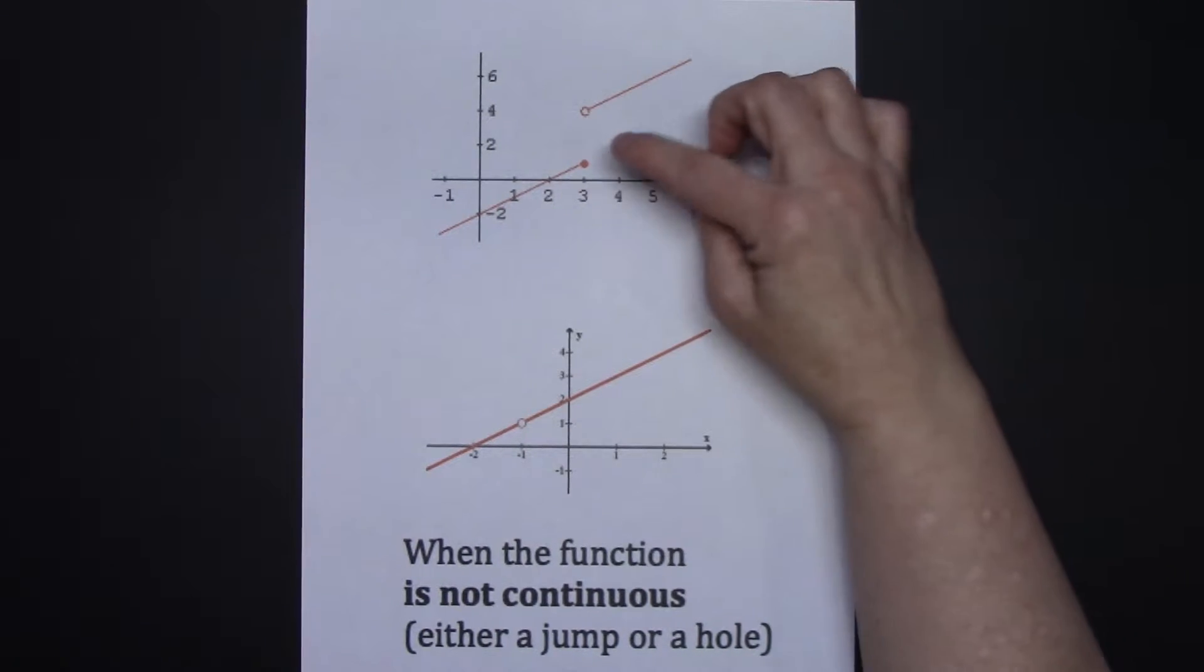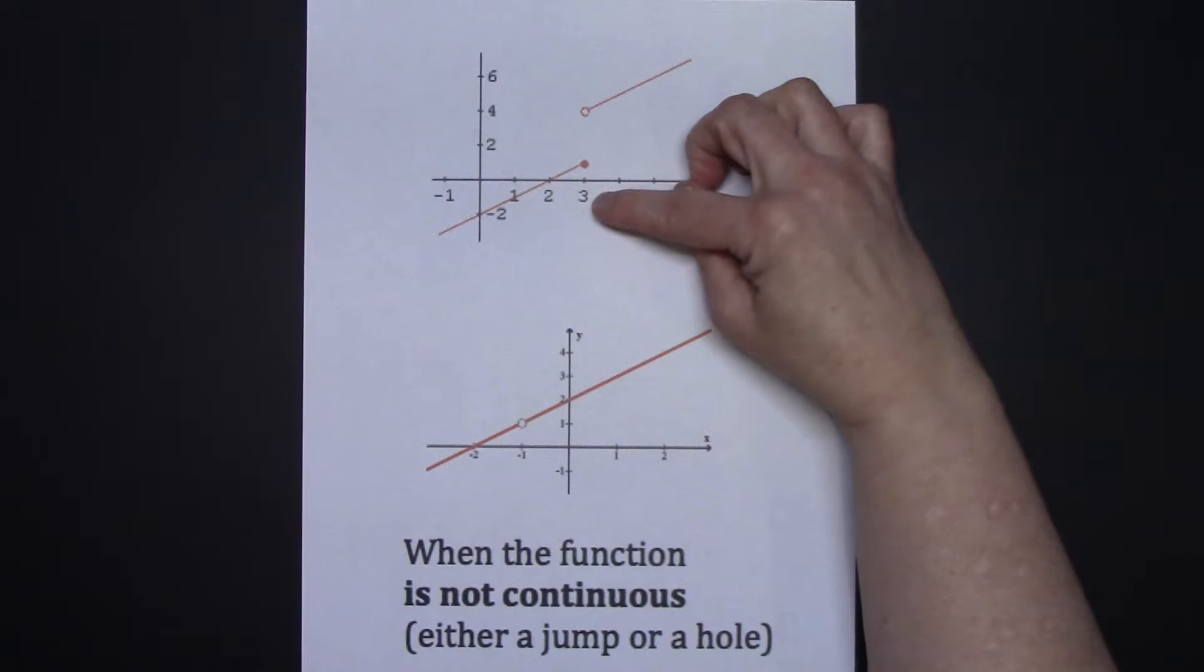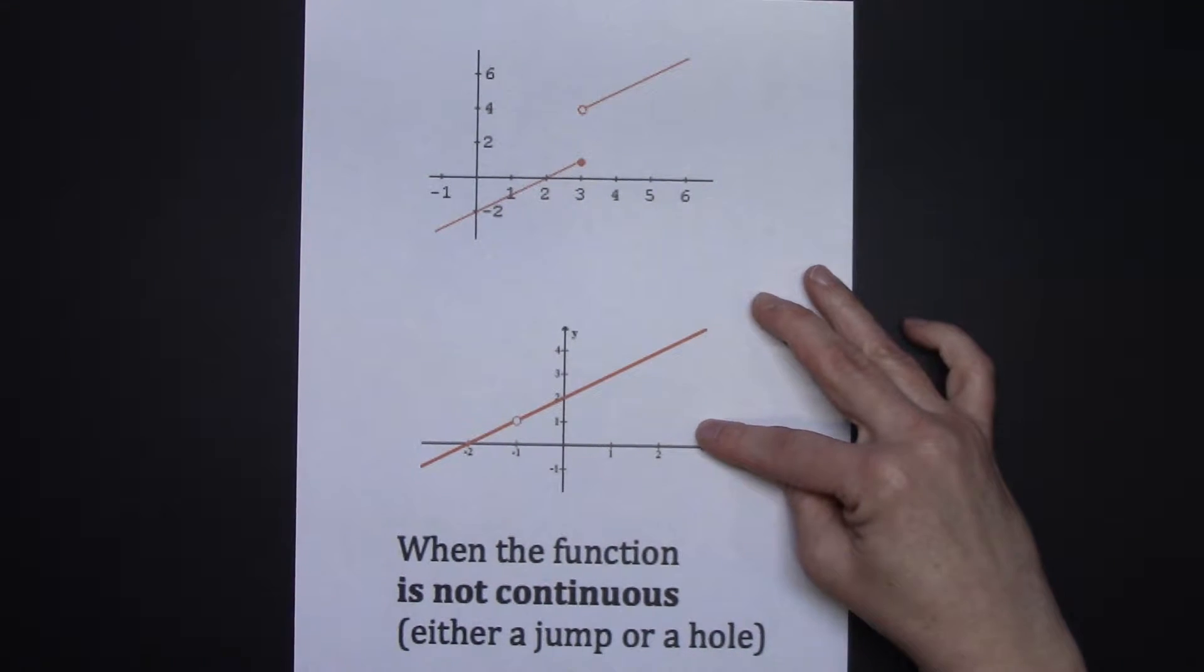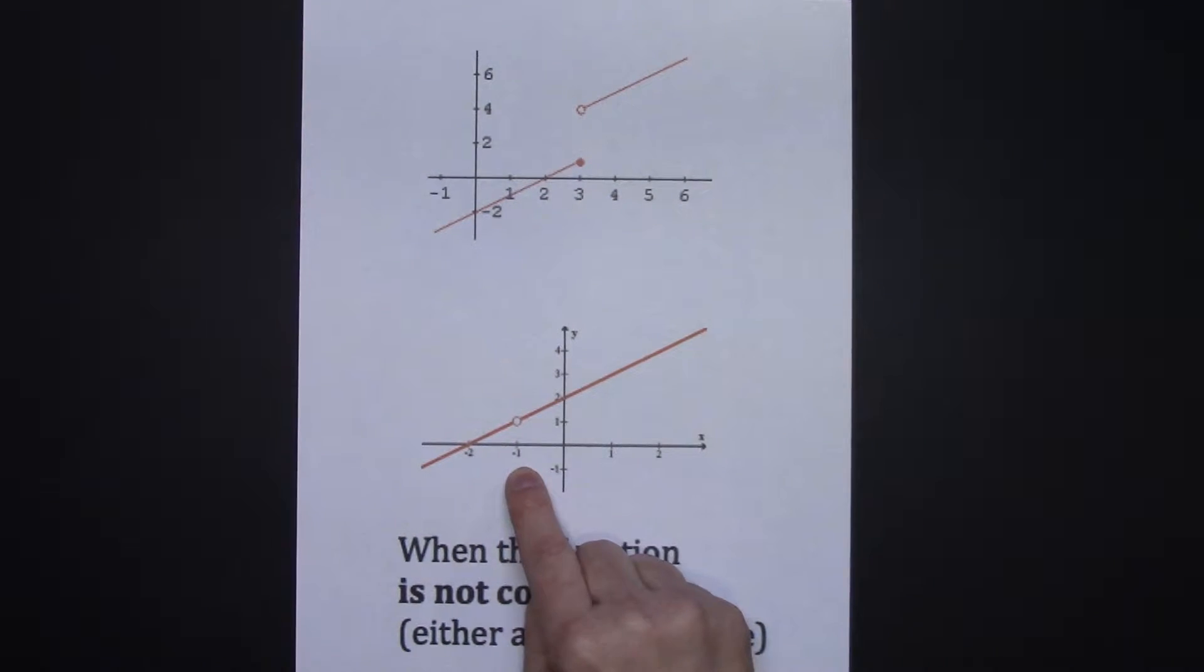So in this first example right here, I have a jump going on at x equals 3, so the function is not differentiable at x equals 3. In this example right here, we have a hole at x equals negative 1, and so therefore the function is not differentiable at x equals negative 1.